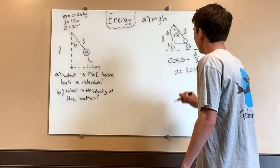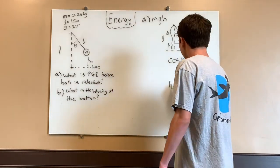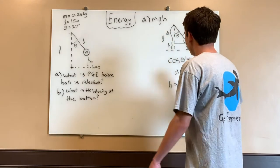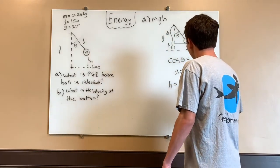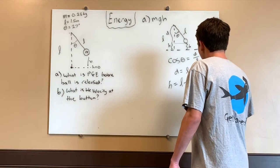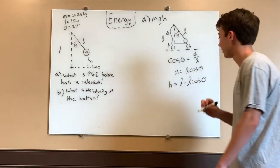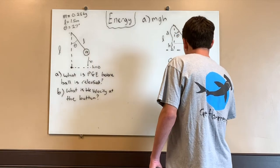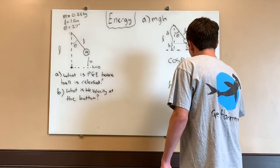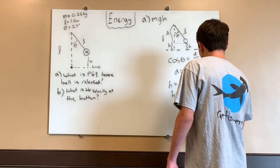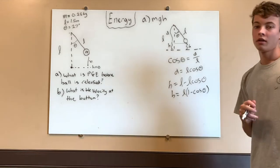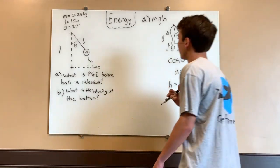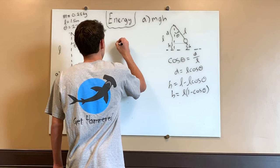And we know that our h is just the total side length minus D, so we get h equals L minus L cosine of theta. Factoring out L, we get h equals L times (1 minus cosine of theta). So this is good because now we have the height and we can plug this into our equation.